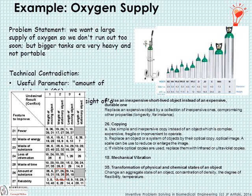Principle 27 is use an inexpensive short-lived object instead of an expensive durable one — specifically, replace an expensive object with a collection of inexpensive ones, compromising other properties like longevity. That's kind of like using multiple smaller bottles. Principle 26 is copying — use a simple and inexpensive copy instead of an object that is complex, expensive, fragile, or inconvenient. Subtypes 26B and C involve optical or infrared copies and are completely irrelevant to this problem, but using an inexpensive copy is a valid idea: rather than an industrial-strength stainless steel bottle, perhaps a fiber-reinforced plastic bottle — maybe not as durable, but just what you need at home.